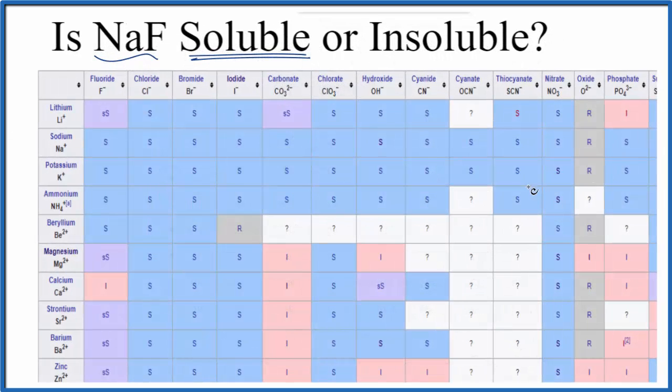Here's our solubility table. We find sodium, that's right here, which forms Na+ ions, sodium ions, and then fluorine forms the fluoride ion right here. So we go over and we go down.